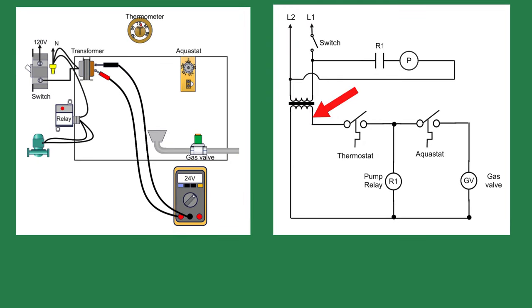My next step is to check the transformer. To do so, I connect meter leads to the secondary side of the transformer. We should have 24 volts across the terminals. It may be 1 or 2 volts higher or 1 or 2 volts lower.